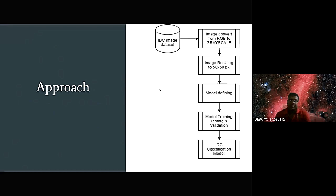Our approach is, here I demonstrated the approach. We included the IDC image dataset. And we converted it from RGB to grayscale for deep learning purpose. And resizing them if they are not exactly 50 by 50 pixels. And then we define our model as CNN. We created a very basic CNN model. And we trained the model, tested the model and validated also. And we predicted the IDC classification model.